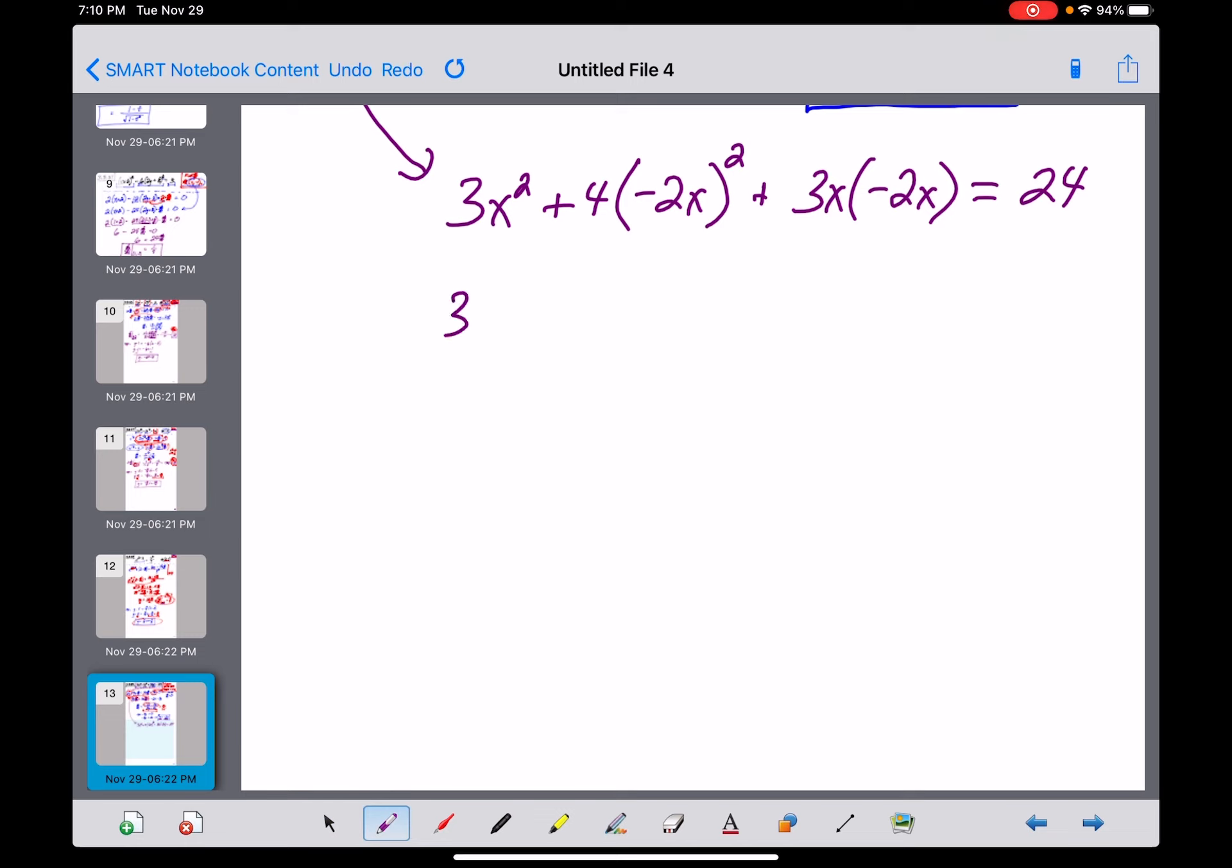Let's see what we can do with this. 3x squared. And then negative 2x squared times itself is 4x squared times 4. That's going to be plus 16x squared. And then right here, we've got a minus 6x squared, all of which equals 24. 3 plus 16 is 19. 19 minus 6, oh, this is bad, is a 13x squared, which is equal to 24.